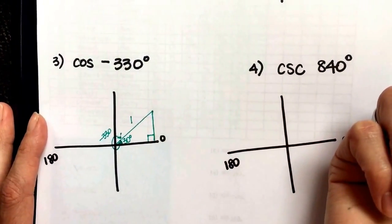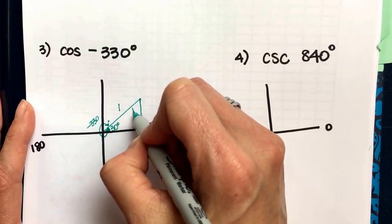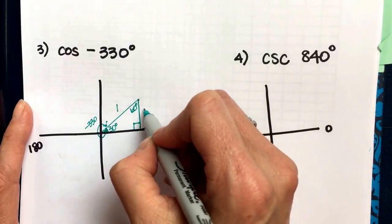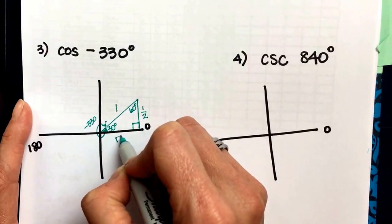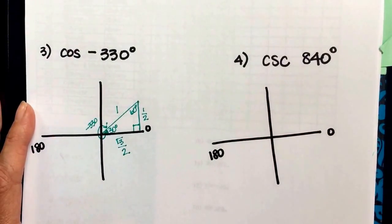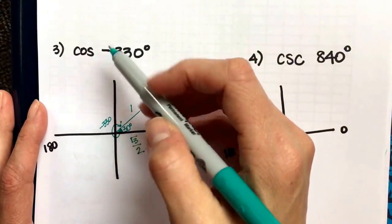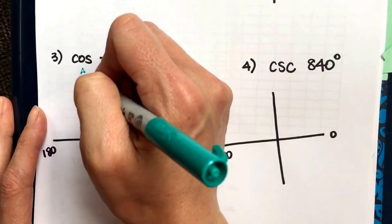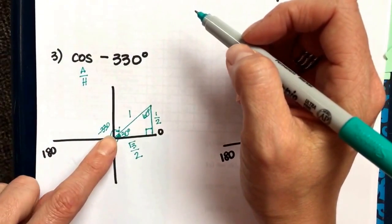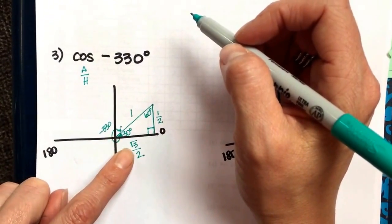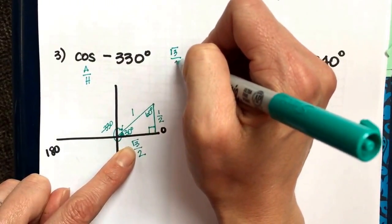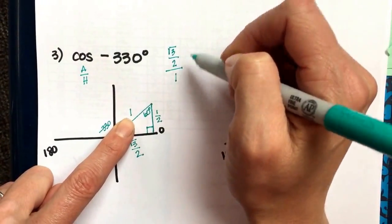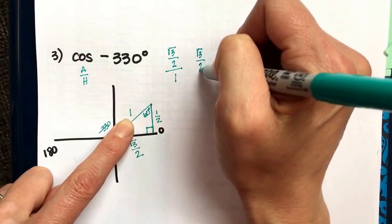So this one is a 30-60-90 again. This one's 30, this one's 90, this one is 60. So label your three sides. I already have the hypotenuse as 1. The short side is a half, and the long leg is radical 3 over 2. Cosine is the adjacent side divided by the hypotenuse. So your angle at the origin, adjacent or next to that is radical 3 over 2, divided by the hypotenuse. The hypotenuse is 1. So just like the first one we did, when you divide by 1, it does nothing to the value. And you get root 3 over 2.